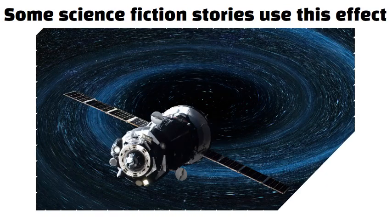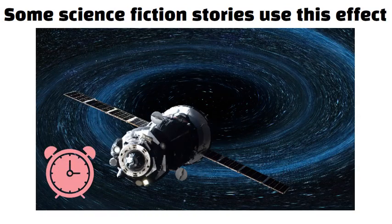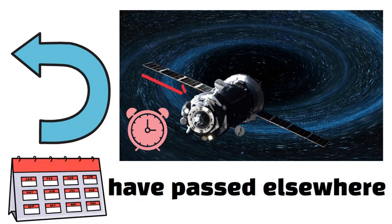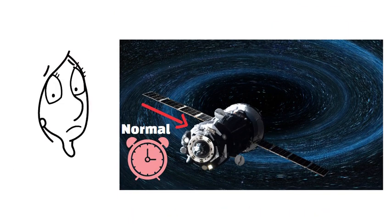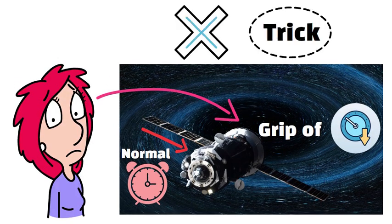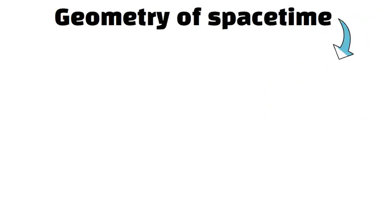Some science fiction stories use this effect. A spaceship parked near a black hole for a short time might return to find that centuries have passed elsewhere. From your perspective, time feels normal. From everyone else's perspective, you were in the grip of slowed time. This isn't a trick or illusion. It follows naturally from the geometry of space-time around a black hole.